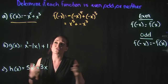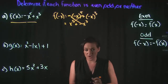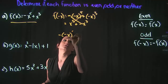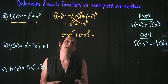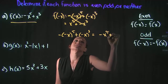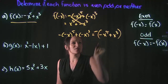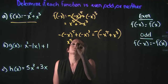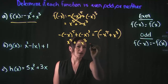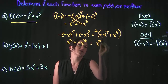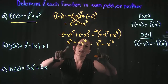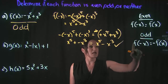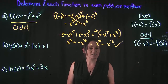No — we have negative x to the fifth here but positive x to the fifth in the original, so it's definitely not an even function. Now let's test for odd. It's odd if f of negative x equals negative f of x. We already simplified f of negative x to x to the fifth plus negative x cubed. If we take the opposite of f of x — which is negative x to the fifth plus x cubed — and change the sign of everything, we get x to the fifth minus x cubed. That's the exact same thing, so this is an odd function.